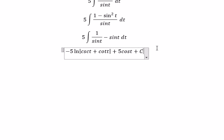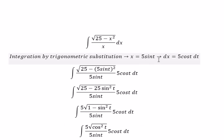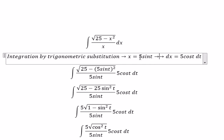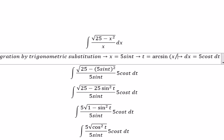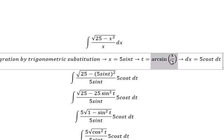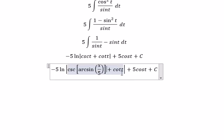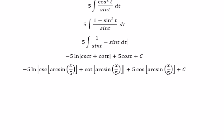We add the constant C. For t, we need to back-substitute. We divide both sides by 5, so t equals arcsin of x over 5. We substitute this back into the answer. That is the end. Thank you for watching.